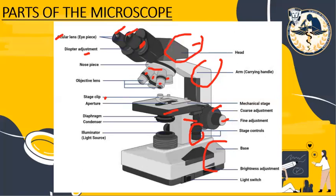In the middle of the stage, we have the aperture — a hole through which transmitted light from the illuminator reaches the stage. We also have our light source, located at the base. It is used instead of a mirror since it is powered by electricity, capturing light from an external source to provide focused light onto our specimen.